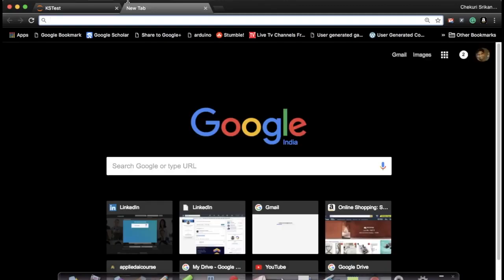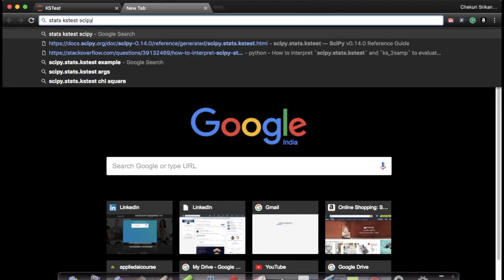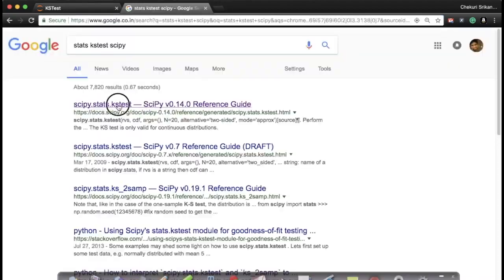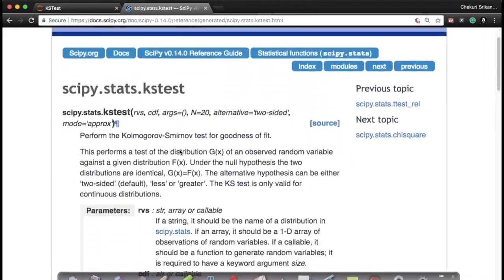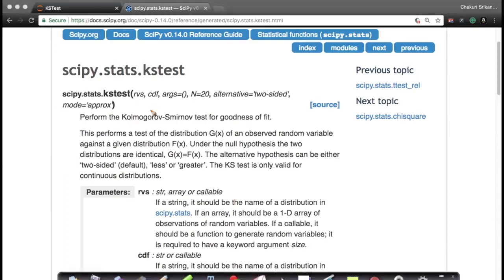Now, let's go and check out some of the contents on stats.kstest.scipy. It's always good to see the function reference. So it basically says that it computes a KS test of goodness of fit. And you give the values that you want and the CDF.